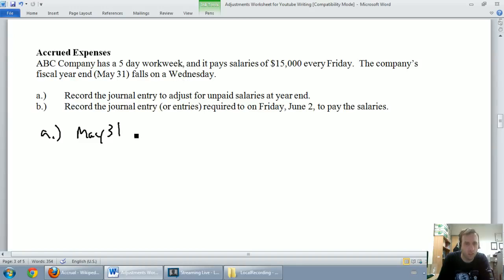The first thing we've got to figure out is how much do we owe them on Wednesday. Before that, we've got to figure out what's a five-day workweek. ABC company has a five-day workweek and pays its salaries every Friday. I would assume if it has a five-day workweek those five days are Monday, Tuesday, Wednesday, Thursday, and Friday. That's the most common sort of bankers days of work.